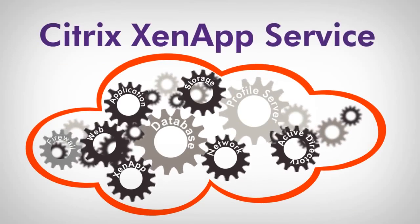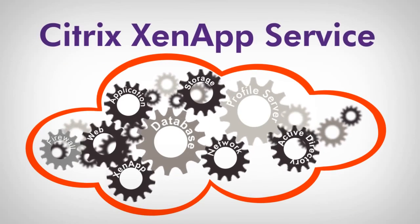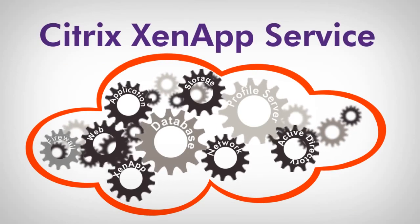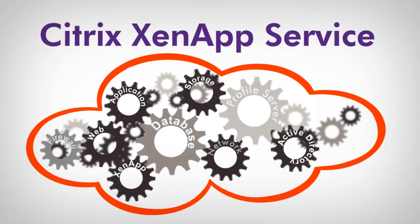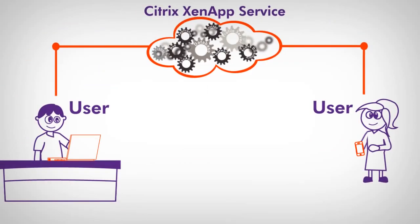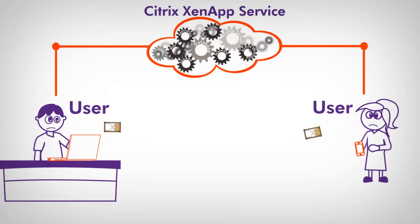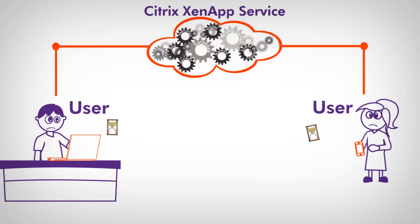The Citrix ZenApp service relies on many systems, networks, and applications in order to work smoothly. Each application is like a cogwheel in the Citrix ZenApp service. A single failure somewhere in the infrastructure can bring the service to a mind-numbing crawl.